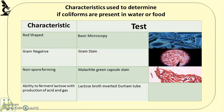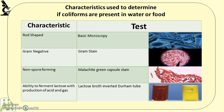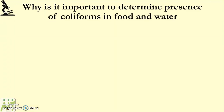Coliforms also have the ability to ferment lactose with the production of acid and gas. For this test we use lactose broth with inverted Durham tubes. In the picture on the left there is no gas production, and on the right you can see gas production. When gas is produced you can see an air pocket, and when there's no gas produced you cannot. This is a lab we will carry out in the future.